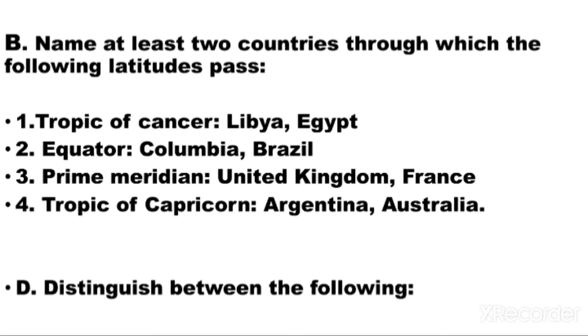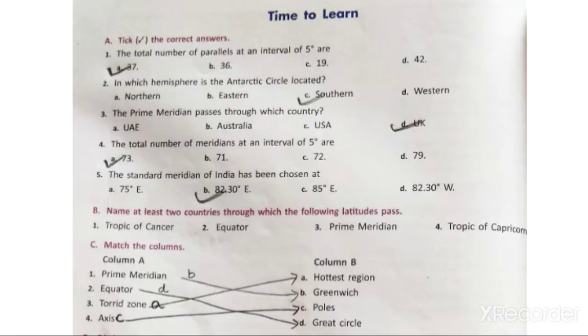Question number C is match the columns, which is actually in a picture. There are 2 columns given. First question is Prime Meridian, which has to be matched with B — answer is Greenwich. Question number 2, Equator — the answer is D, that is Great Circle. Question number 3 is Torrid Zone — answer is point A, Hottest Region. Question number 4, Axis — answer is C, Poles.